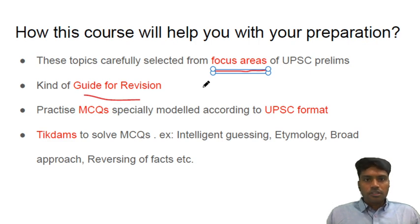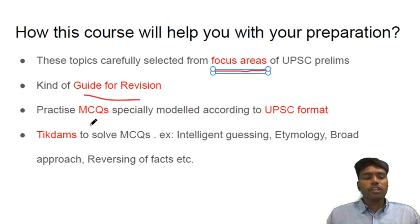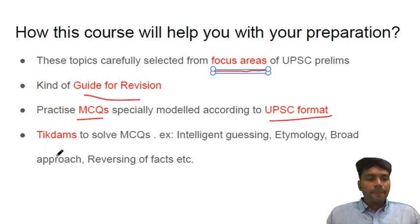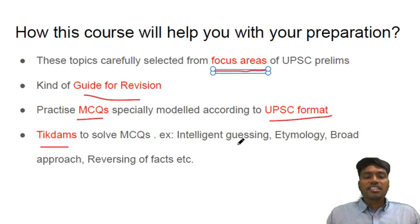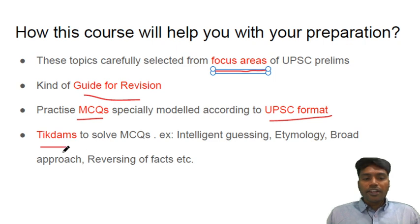For multilateral institutions, focus on: who are its members, are there any important conventions, how is the voting power, etc. So while you are going for revision again, you will be focusing on these areas. Apart from that, we will be dealing with MCQs in the UPSC format. And most importantly, this course will provide tick terms — UPSC has a strategy of preparing tricky options, and we will be providing certain tick terms to help you solve those.